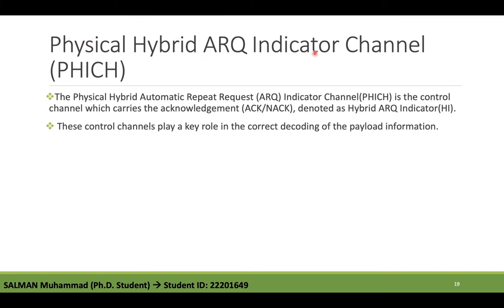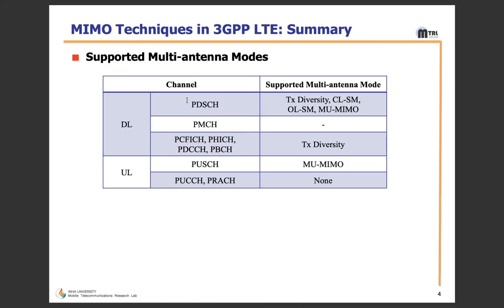The fourth channel is PHICH — Physical Hybrid ARQ Indicator Channel. H-ARQ stands for Hybrid Automatic Repeat Request. PHICH is the control channel which carries acknowledgements (ACK/NACK), denoted as Hybrid ARQ indicators. These control channels play a key role in correct decoding of payload information. We also have uplink channels: PUSCH, PUCCH, and PRACH.